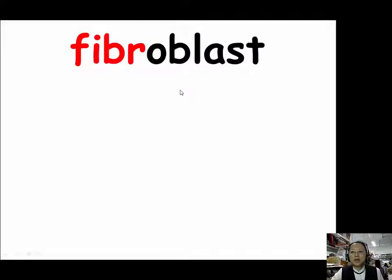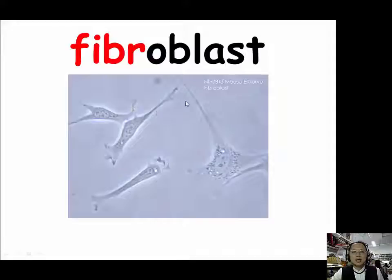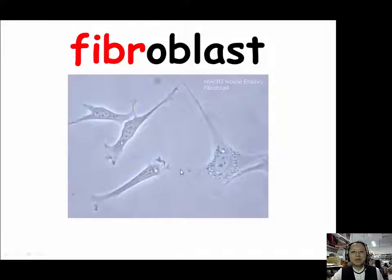For FIBRO, our example is fibroblast. In this picture, the fibroblast shown is a cell line called NIH3T3 mouse embryo fibroblast. It is a very common cell line used in many laboratories.